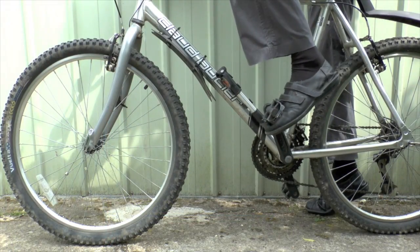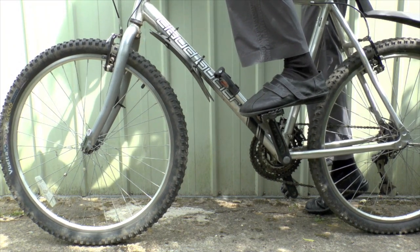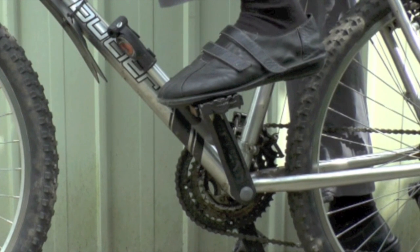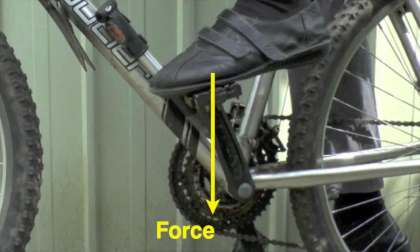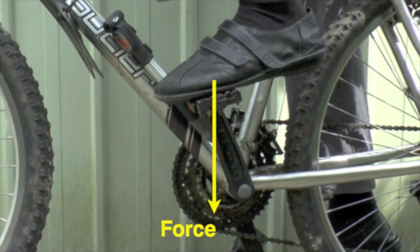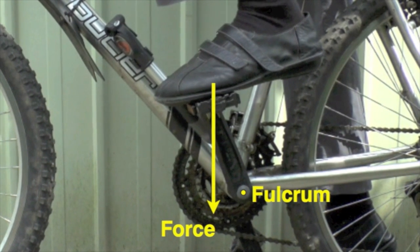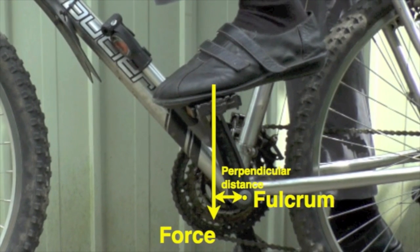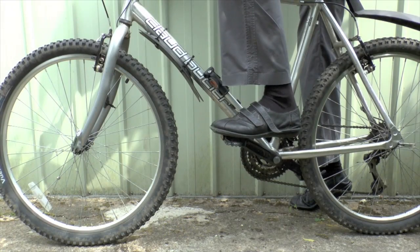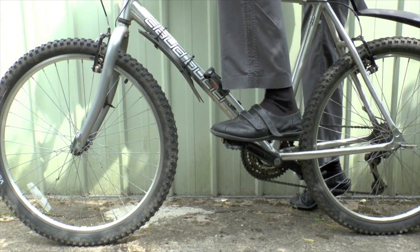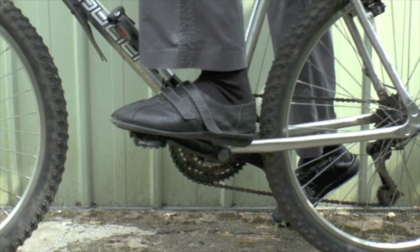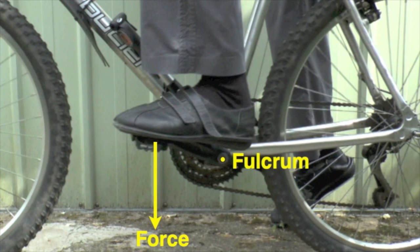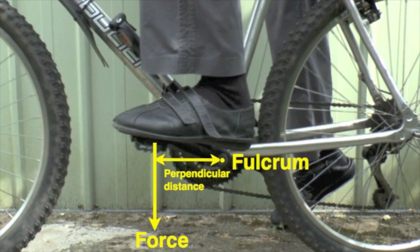Another example of the importance of perpendicular distance is something many will be familiar with. If you press down on the pedal when it is at the top of its circle of movement, the effect of pushing the bike forward is much less. That's because the force acting straight downwards is quite close to the fulcrum — the perpendicular distance is small, so the moment of the force is small. When the pedal is in the lower position the turning effect is much greater, because the perpendicular distance between the direction of the force and the pivot is much larger, and therefore the moment of the force is much larger.